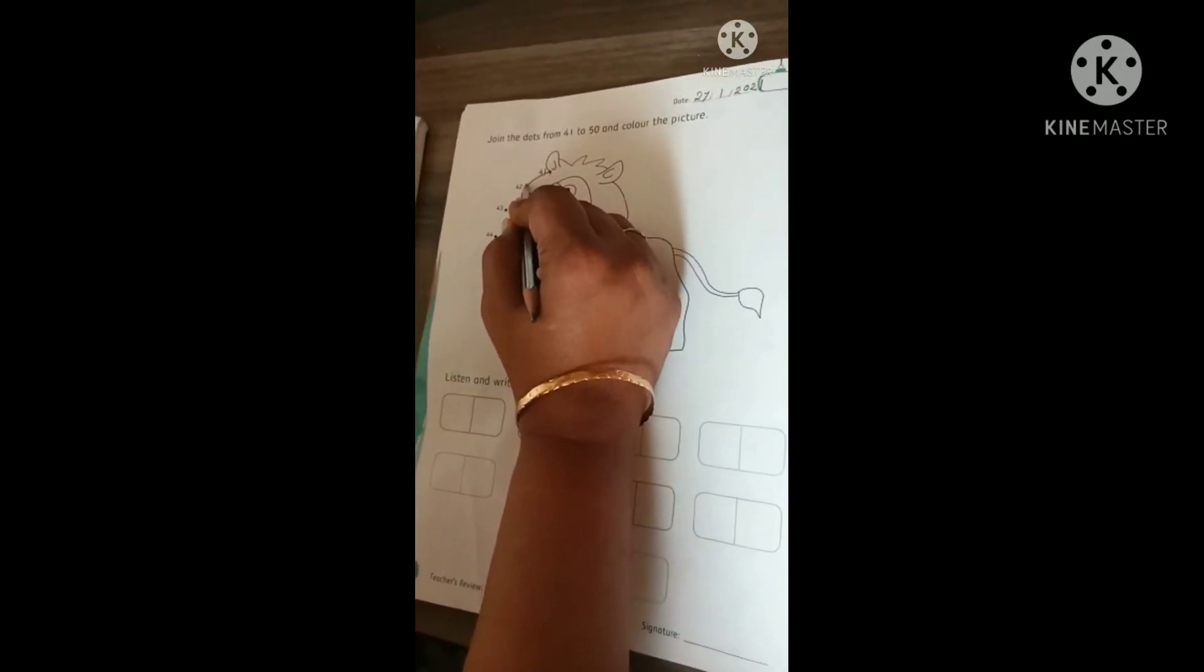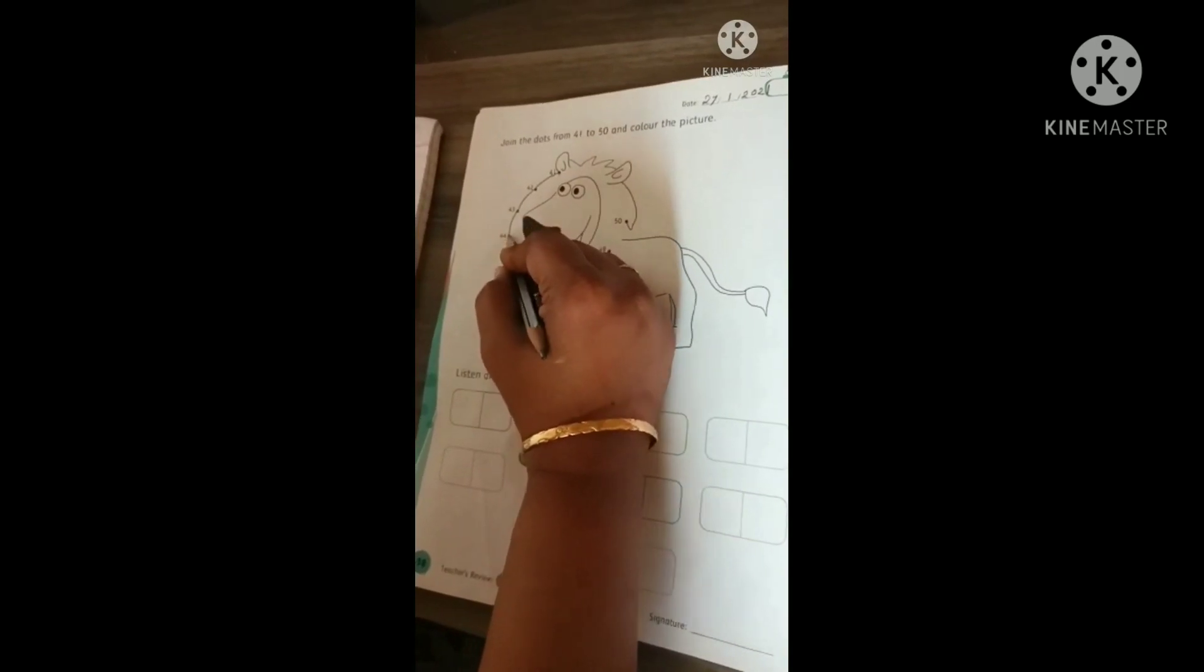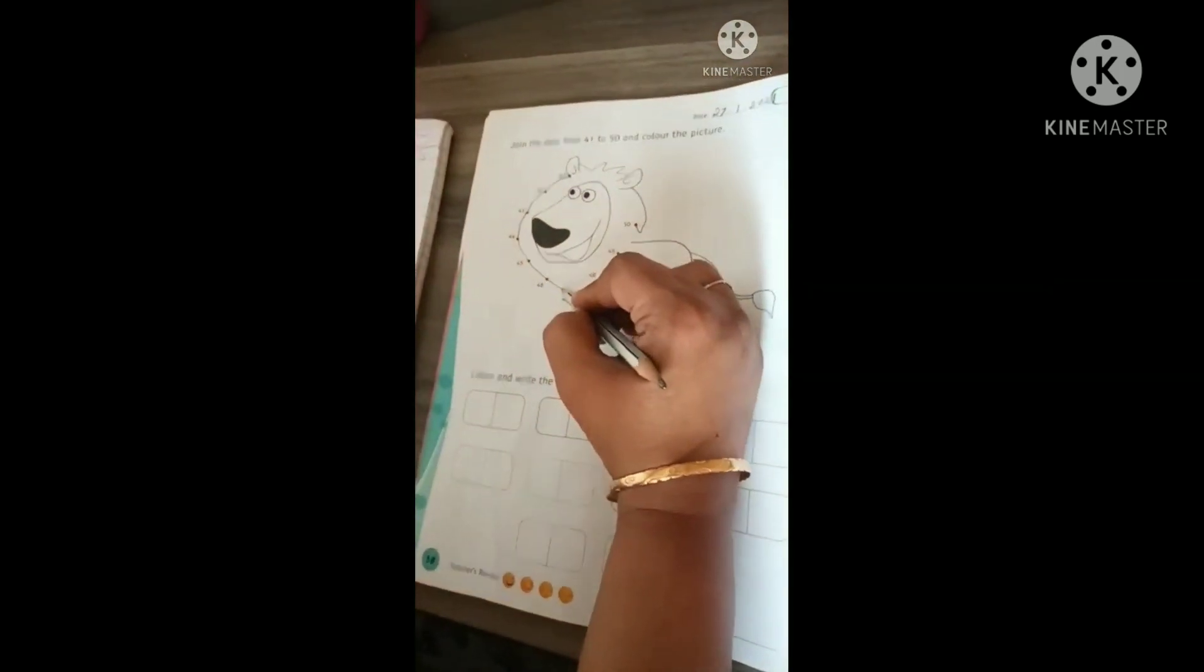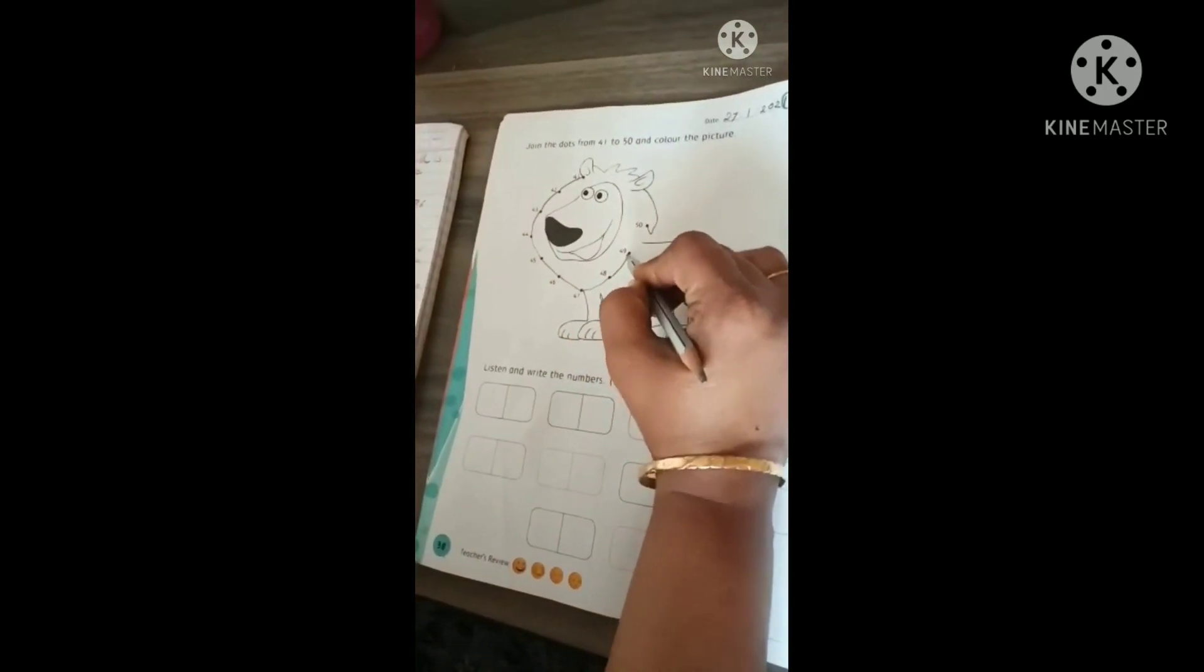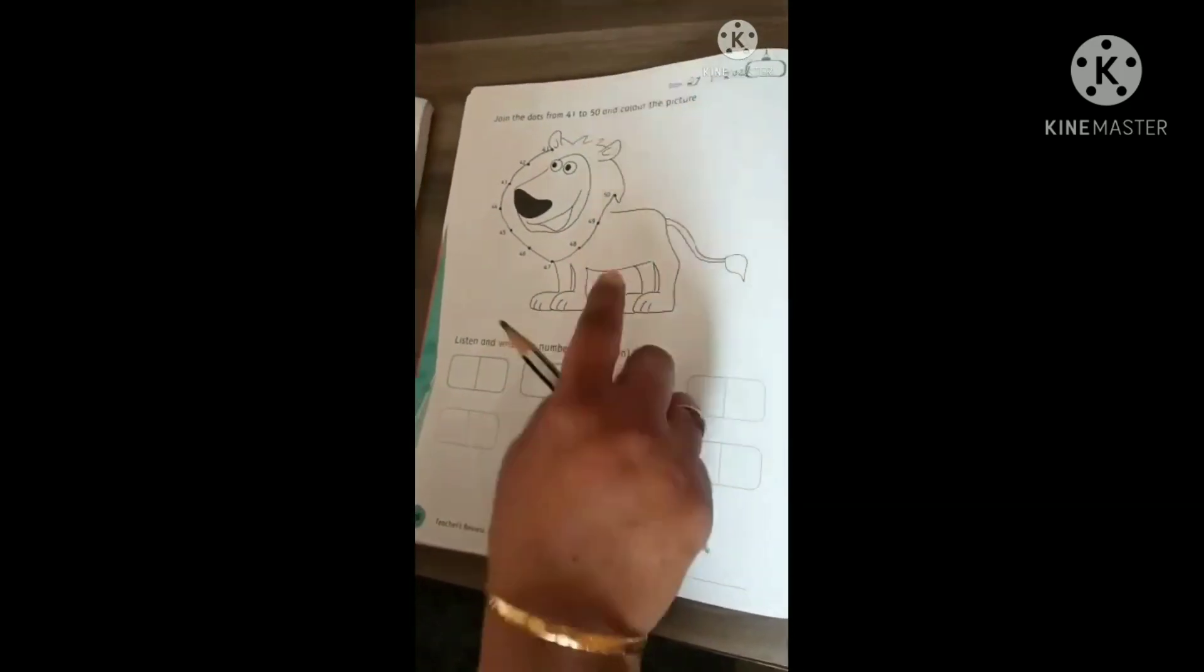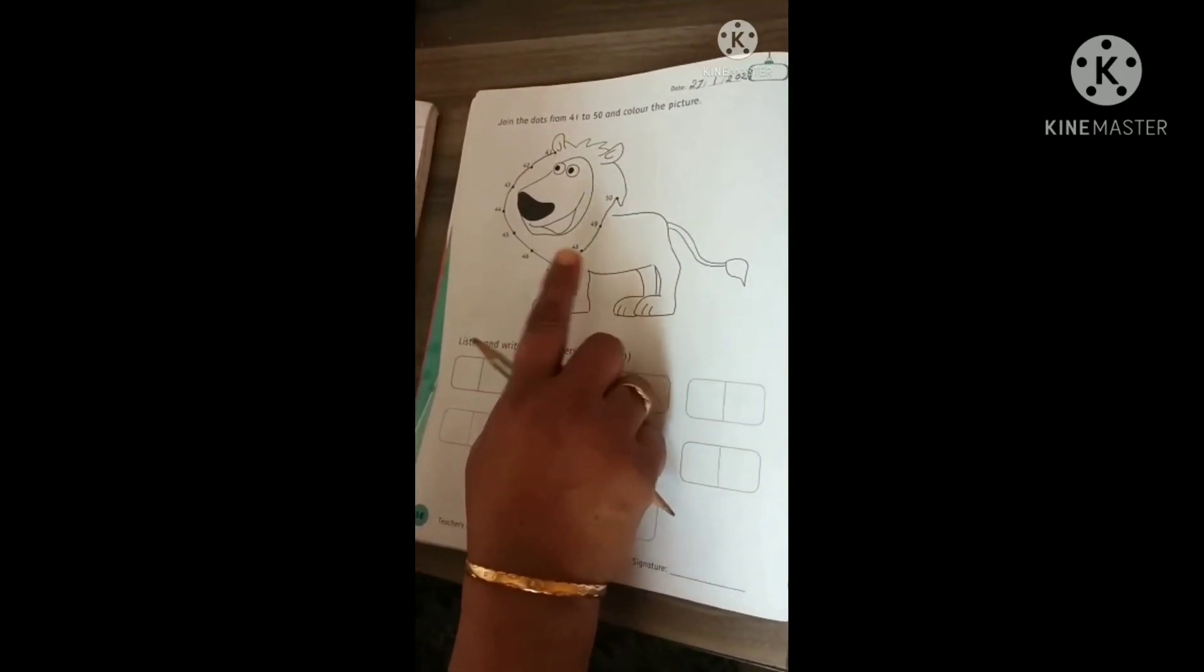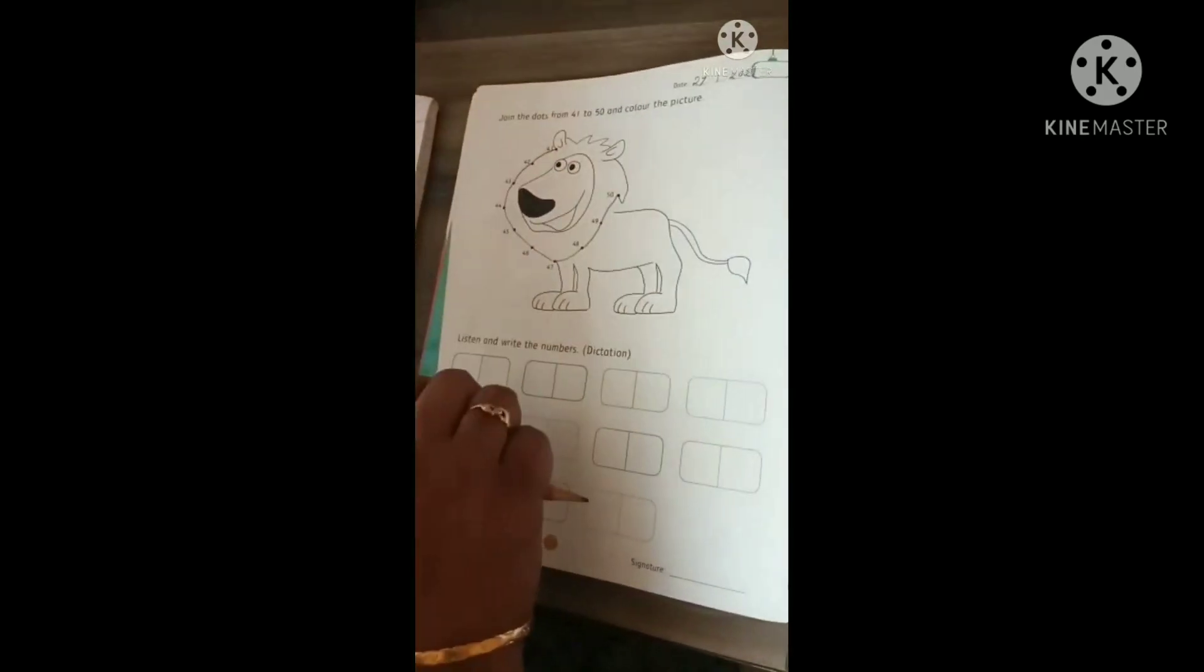41 after, come on. 42, 43, 44, 45, 46, 47, 48, 49, 50. Oh. Our picture is ready. Which picture is this? This is lion. Now, color on it. Okay. Thank you. Bye-bye.